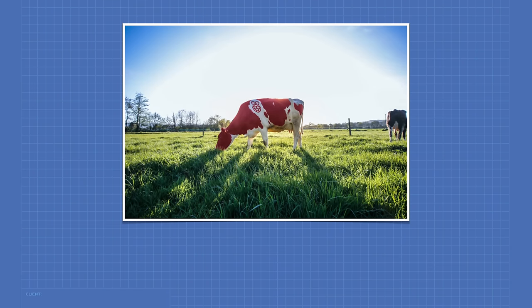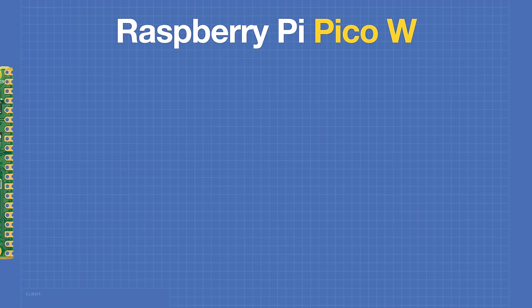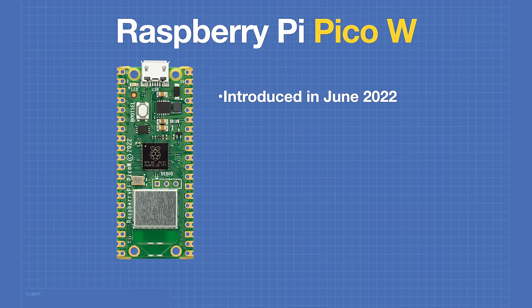In early June of 2022, Raspberry Pi tweeted a picture of a cow with a Raspberry Pi logo on it. The picture had the caption 'PI cow,' and those who were clever enough to rearrange the letters realized they were actually introducing a new product: the Pico-W. This new microcontroller was introduced at the end of June 2022.